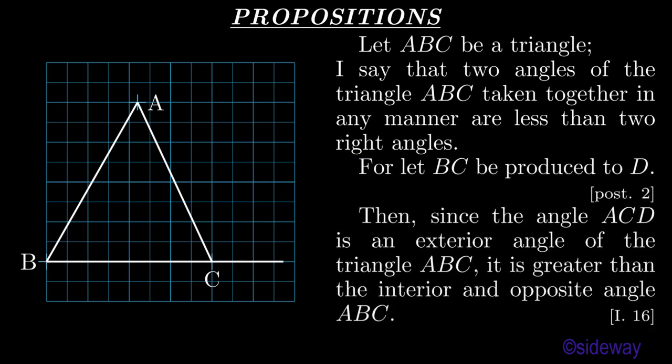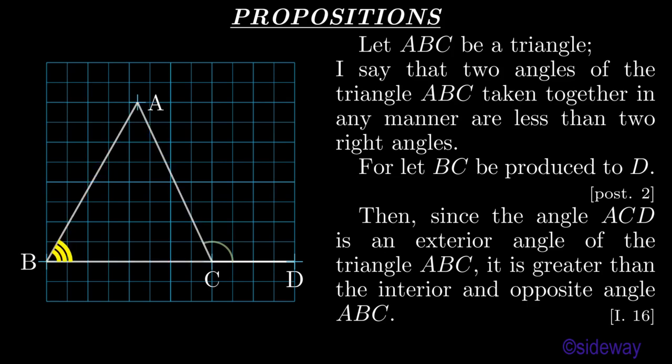Let BC be produced to D, by Book 1 Postulate 2. Then, since the angle ACD is an exterior angle of the triangle ABC, it is greater than the interior and opposite angle ABC, by Book 1 Proposition 16.